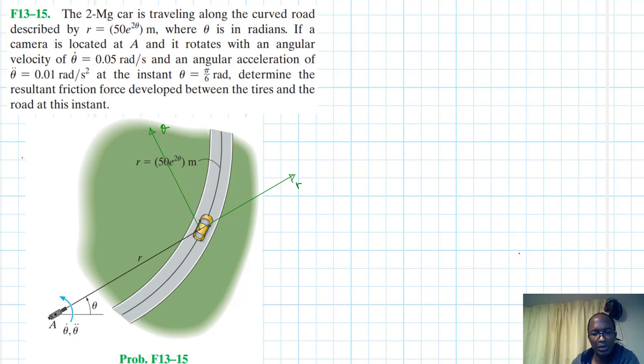And the question is to find the resultant friction force in that direction as well as in that direction. And let's call this F_R. We call this F_theta. And then from the two, we are going to find the resultant friction force.